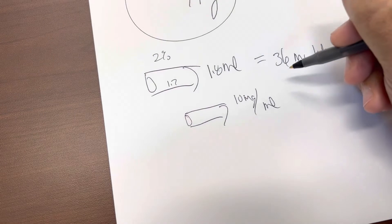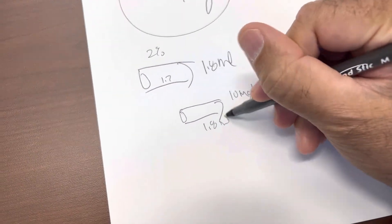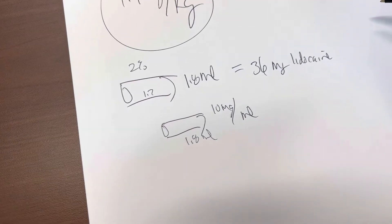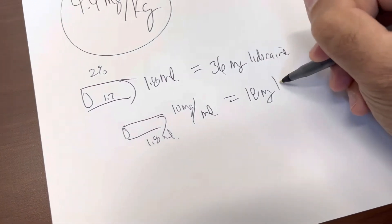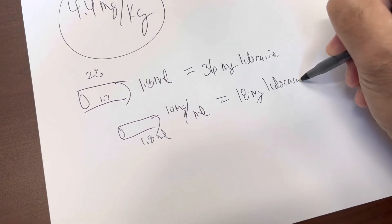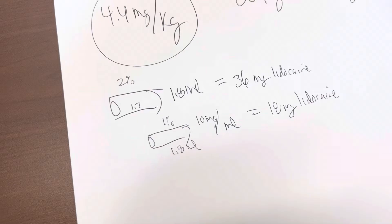And in 1%, if this was a 1.8 milliliter carpule, then we know that there are 18 milligrams of lidocaine in it. But that's not the case. We're not using, in dentistry, we're not using a 1% solution.